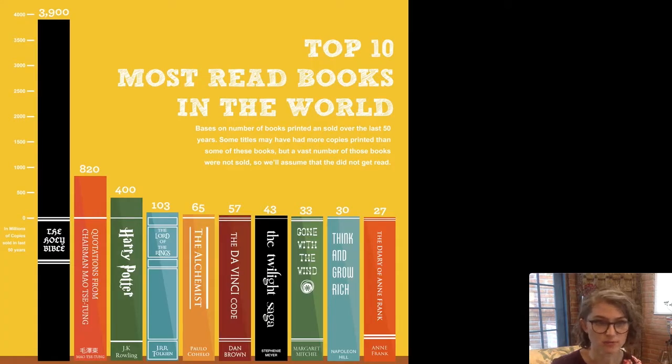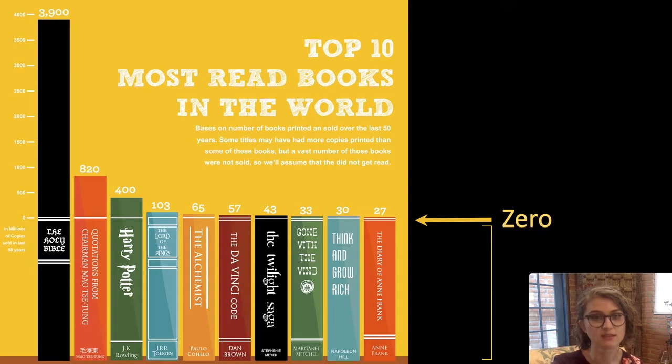Here's another problematic visualization. Any ideas what's wrong with this one? It's a little bit trickier. The problem here is that zero is all the way up here, and everything in this space looks like it's data, when in fact it's just filler content.